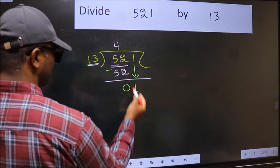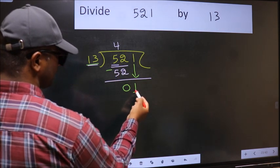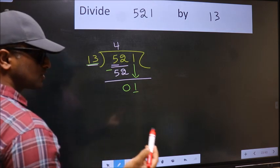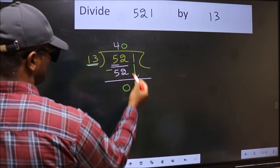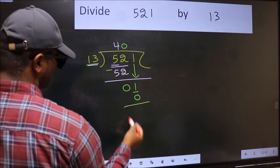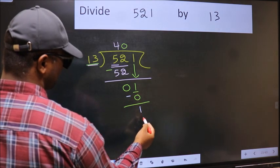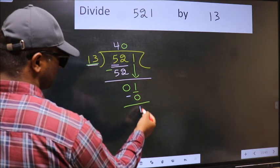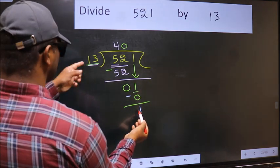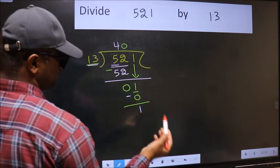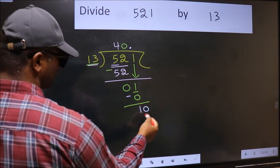If I take 1, we will get 13 times 1 is 13. But 13 is larger than 1. So what we should do is take 0. So 13 into 0 is 0. Now we subtract: 1 minus 0 is 1. Over here we did not bring any number down, and 1 is smaller than 13. So now we can put a dot and take 0. So we have 10.